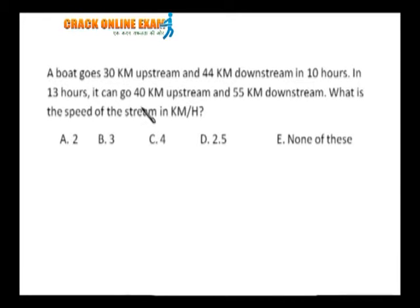What is the upstream speed? When the boat is going against the stream, against the flow of the stream, the effective speed is reduced. Suppose the speed of the boat is x kilometers per hour and the speed of the stream is y, then the effective upstream speed will be x minus y kilometers per hour.